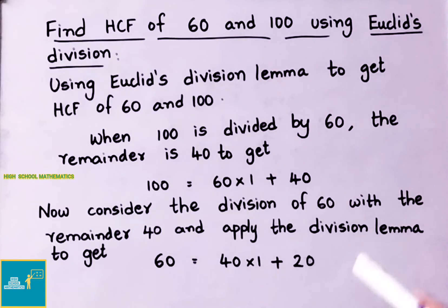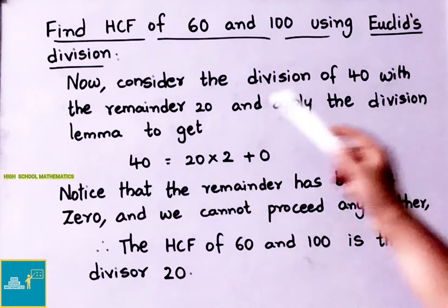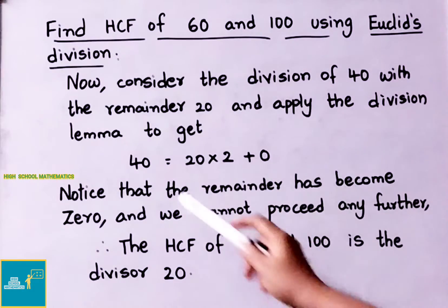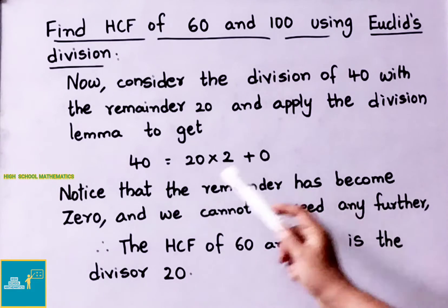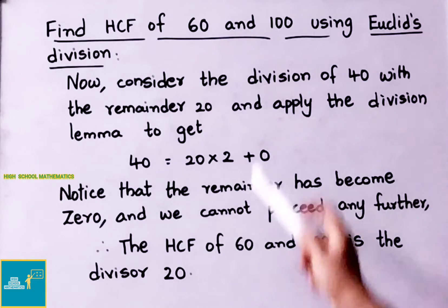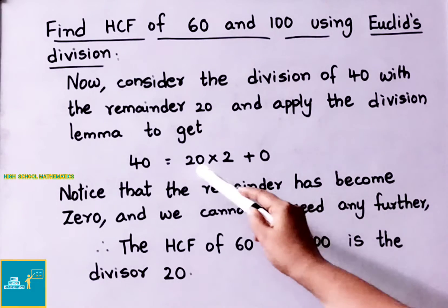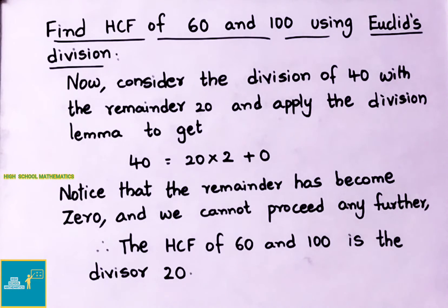Again we apply the division lemma until we get remainder 0. Now consider the division of 40 with remainder 20. Applying division lemma: 40 equals 20 times 2, giving remainder 0. Since remainder is 0 we cannot proceed further. Therefore the HCF of 60 and 100 is the divisor 20.